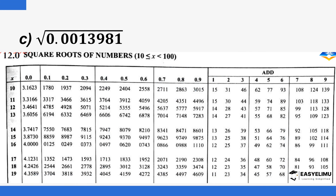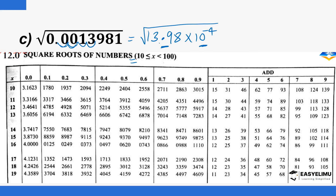For the last example, we again express the number in the form a times 10 to the power n. Moving the decimal point four places gives 13.98 — a number between 1 and 100. So we have 13.98 times 10 to the power negative 4. Finding the square root, the square root of 10 to the power negative 4 is 10 to the power negative 2 by dividing the power by 2.